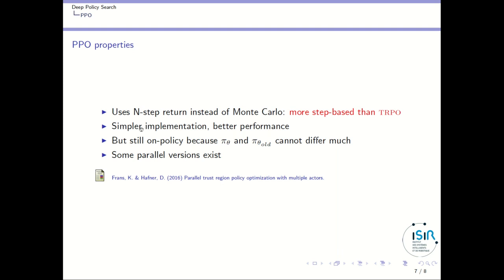Also, as I just told you, the implementation is much simpler than the one of TRPO and it performs better. But the point is that PPO is still on-policy because you have to compute the performance of the new policy based on samples from that particular policy. You cannot use samples from a previous policy and the different policies cannot differ much.